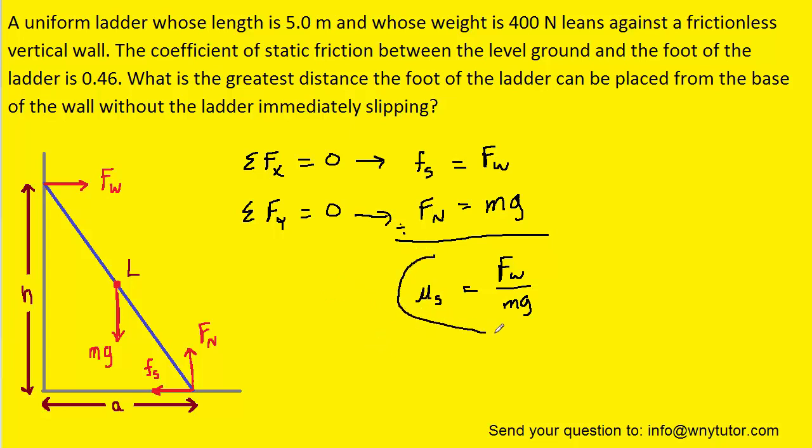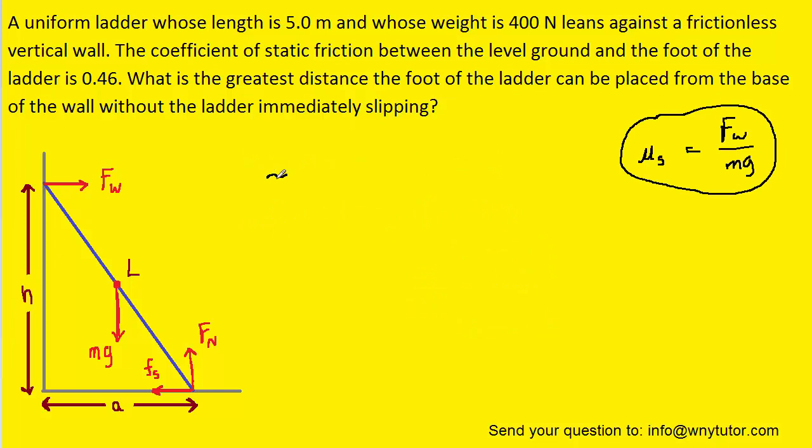And this is a result that we're going to hold onto and refer to shortly. Since the ladder is in equilibrium, we know that the sum of the torques is also equal to zero. And when we evaluate this equation, we have to select a pivot point. For convenience, we will select the pivot right here, since that is the point where the greatest number of forces is passing through.